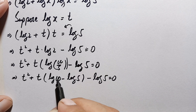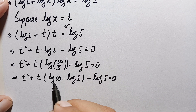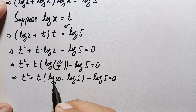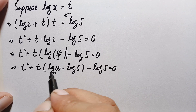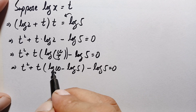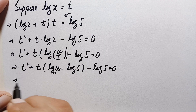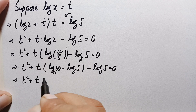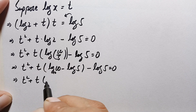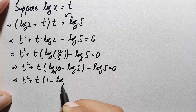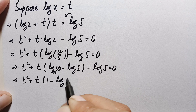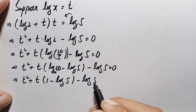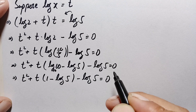Now log 10 with base 10 is equal to 1, so we replace it with 1. This becomes: t squared plus t times (1 − log 5) minus log 5 equals 0.